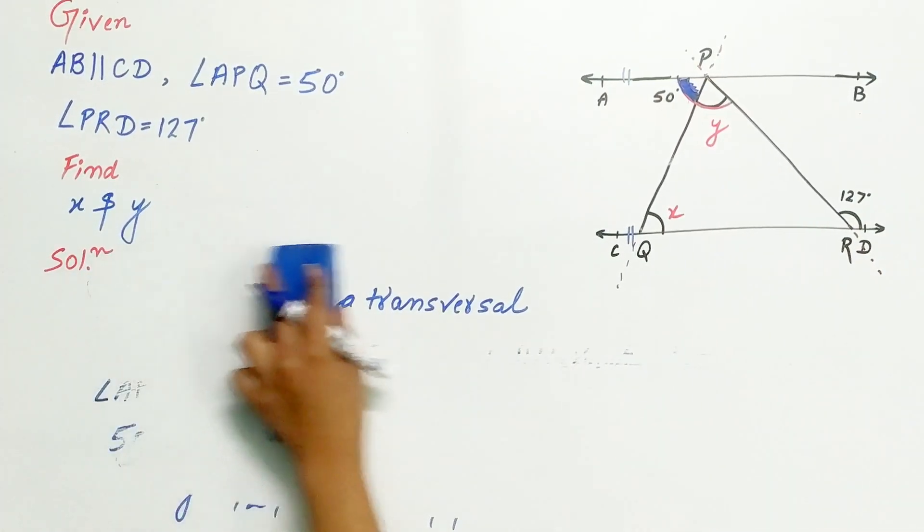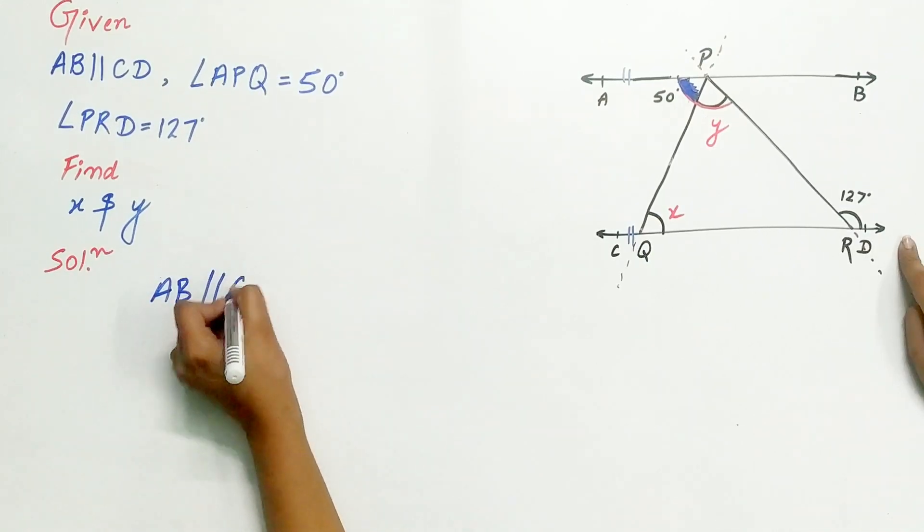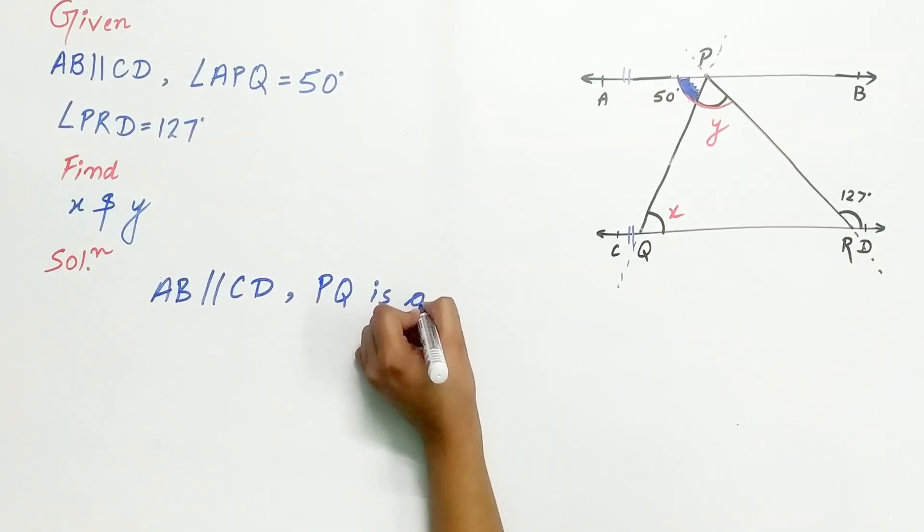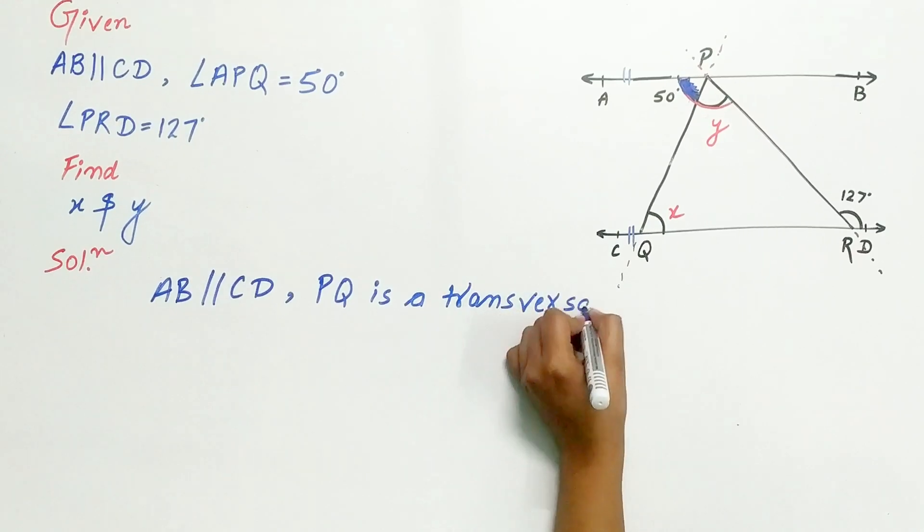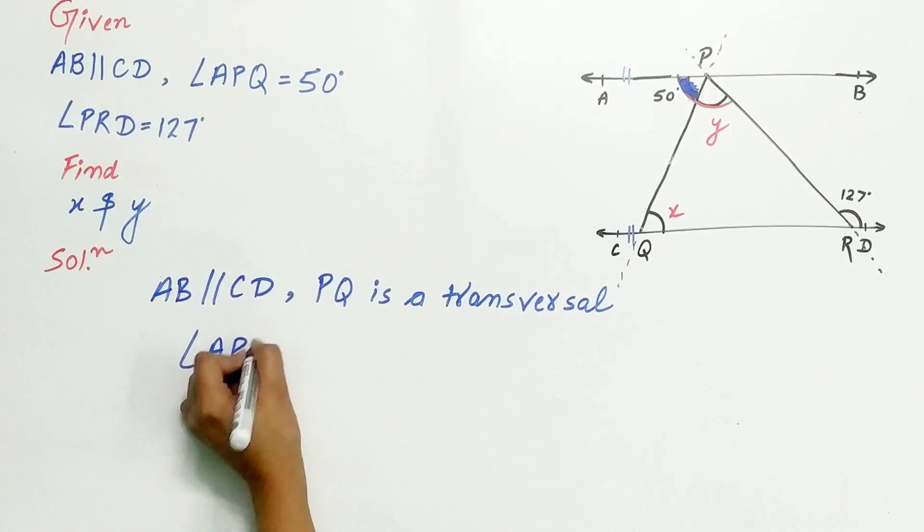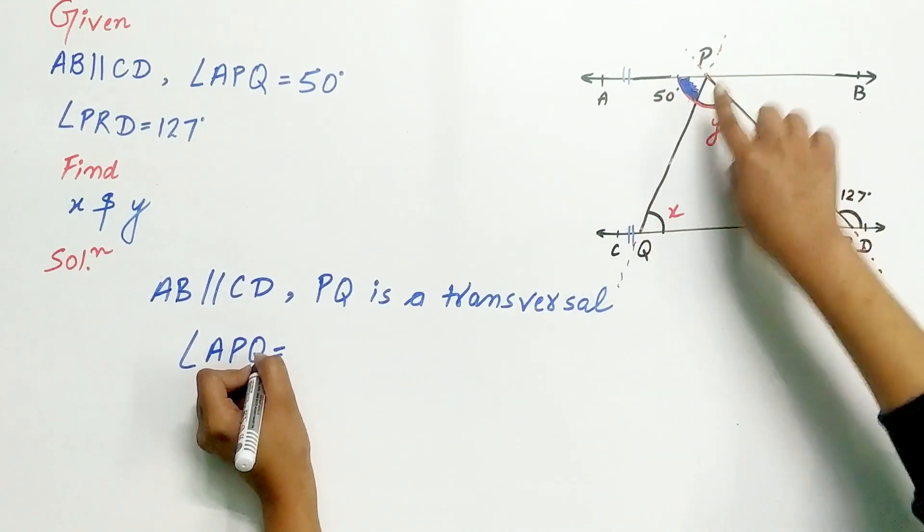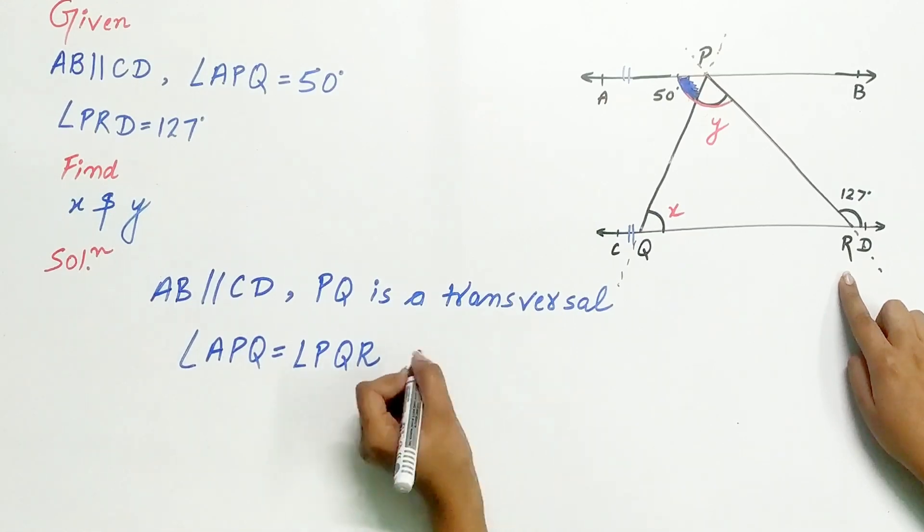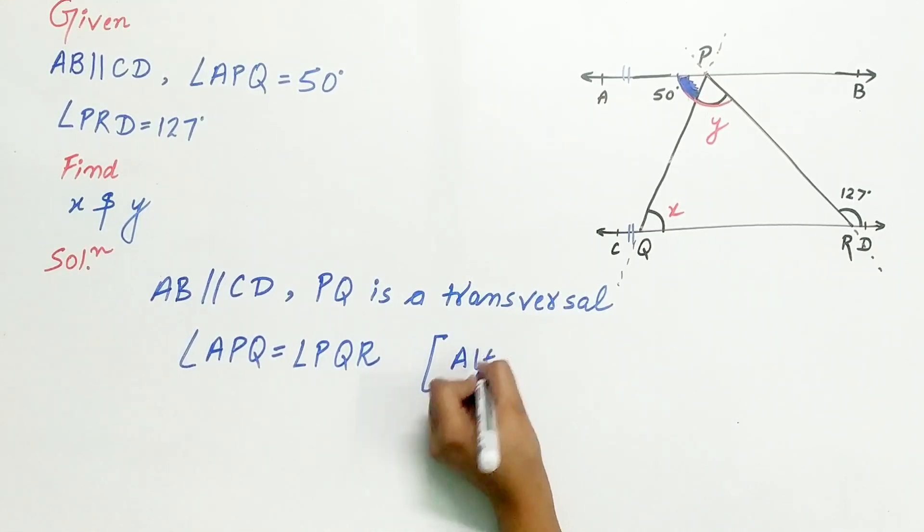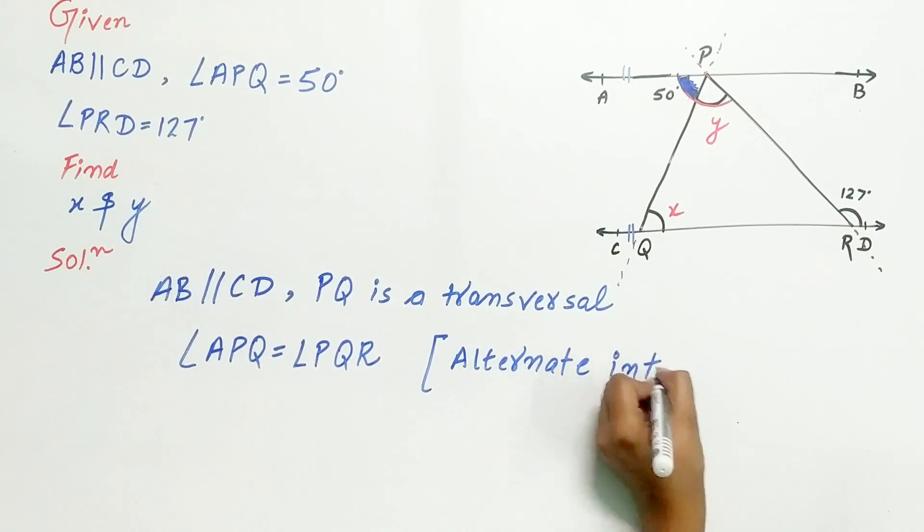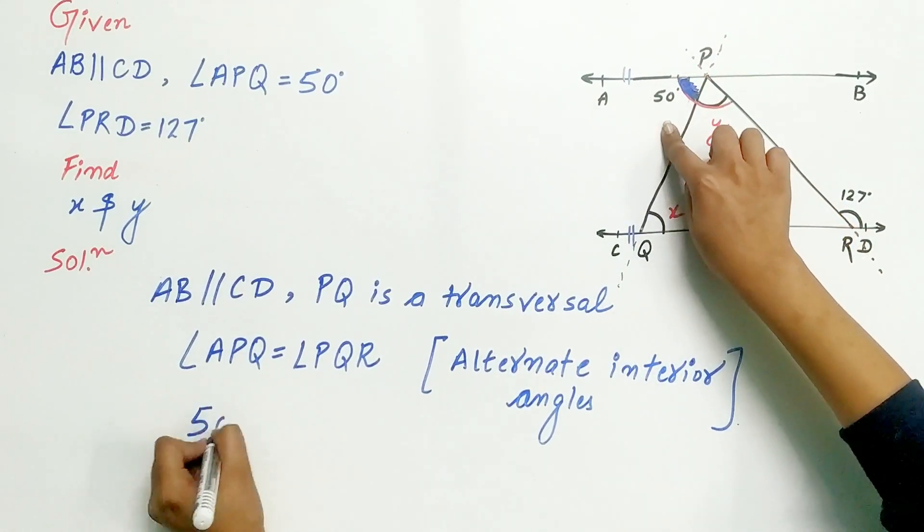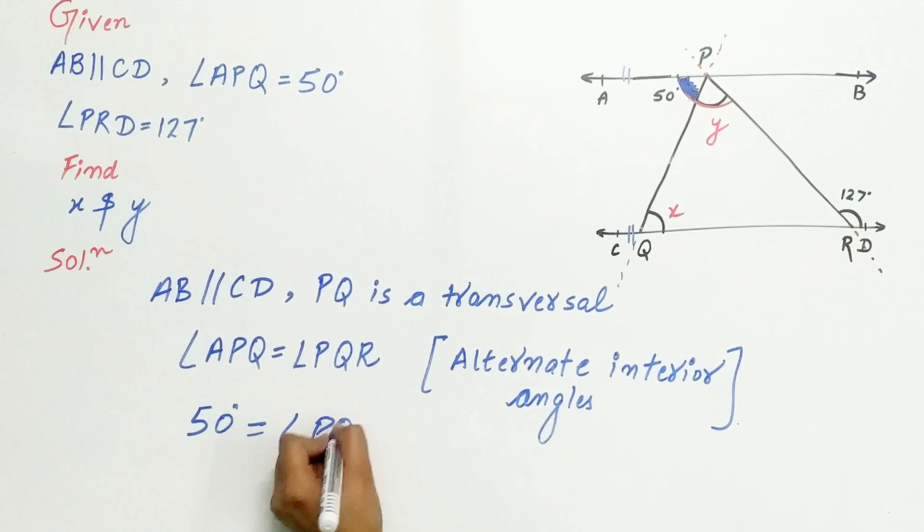Let's do it. AB is parallel to CD, PQ is a transversal. Angle APQ is equal to angle PQR. Angle APQ is 50 degrees and so is angle PQR, or x.